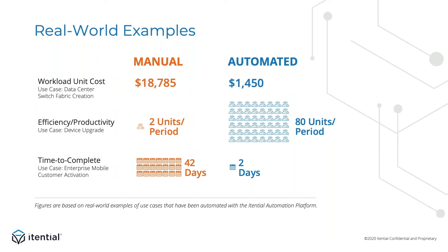Now that I've covered the four metrics, I'd like to show some examples based on use cases that Itential users have automated recently. The first use case was focused on the planning, engineering, and configuration of new mobile edge compute sites, specifically focused on the creation of the switch fabric and the integration with the network and network controllers. The units used for this metric were the switch fabrics. The pre-automation cost was calculated to be $18,785. Through automation, the team was enabled to eliminate a lot of manual effort by moving from manual data collection to electronic sources of data, and by automating provisioning both to the devices and to the overlay controllers through integrations. With automation, the workload unit cost went from $18,000 to $1,450 — requiring less than 10% of the manual effort hours.